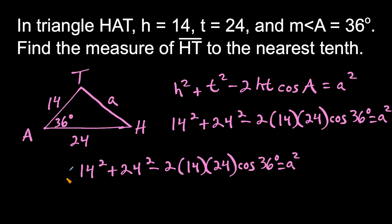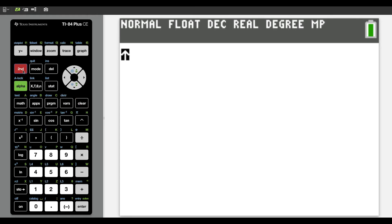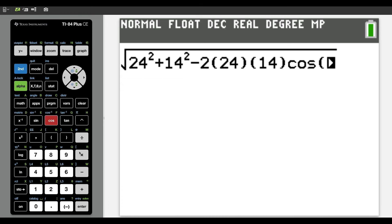So let's just take a copy of this equation here, because we're solving for a. So all we have to do now is just take the square root of both sides. So we'll go ahead and type this in. We have the square root of 24 squared plus 14 squared minus 2 times 24 times 14 times cosine of 36 degrees.